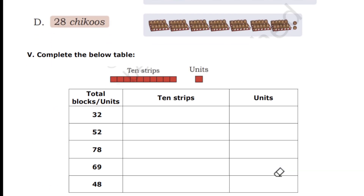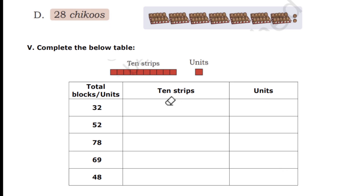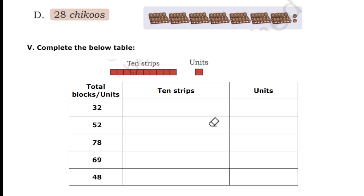The next question is 'Complete the Below Table.' We have 10-strips and single units. If you want to make 32, how many strips are required and how many units? If you want 52, how many strips and how many units? You don't need to draw strips — just write the numbers. For example, for 78: you need 7 ten-strips and 8 units.